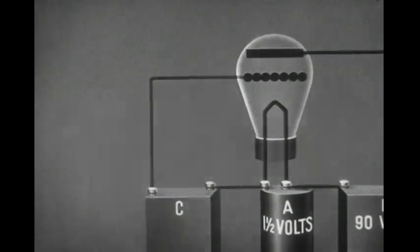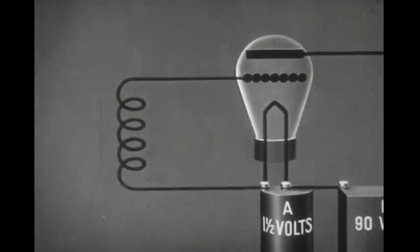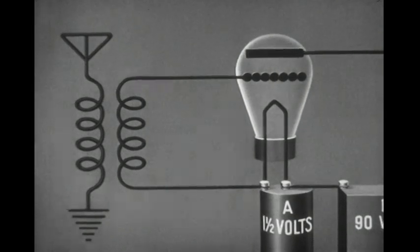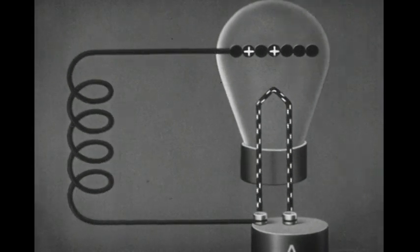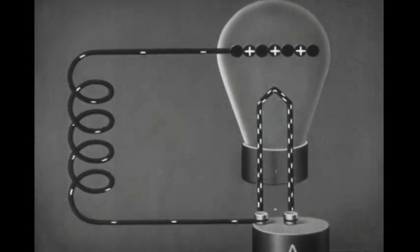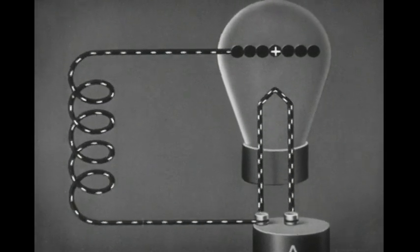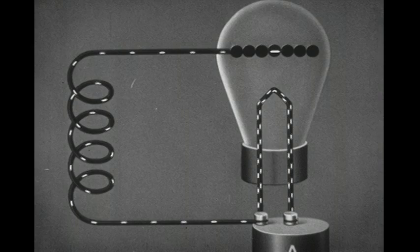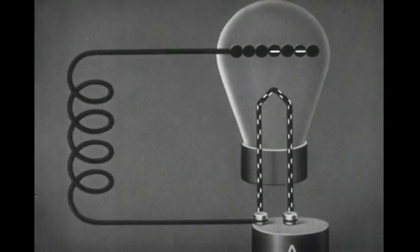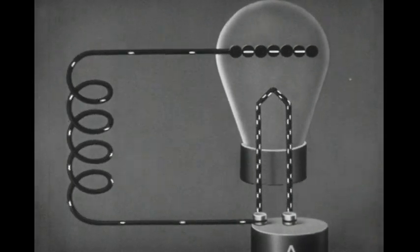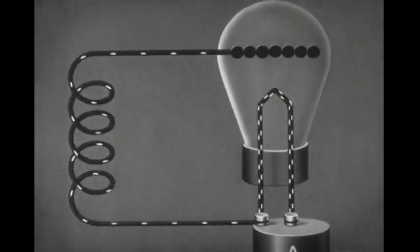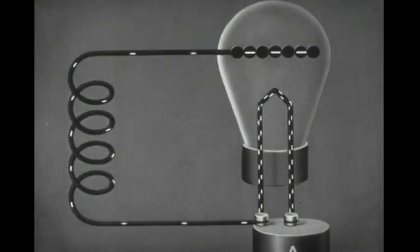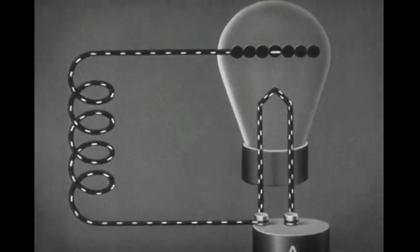Now let us connect the grid and the filament to the secondary coil of a transformer whose primary is connected to an aerial. The current in the coil is a high-frequency alternating current. When electrons flow off the grid, the grid becomes more positive. When the current reverses and electrons flow onto the grid, the grid becomes more negative. Thus the charge on the grid changes at the same frequency as the radio-frequency current.